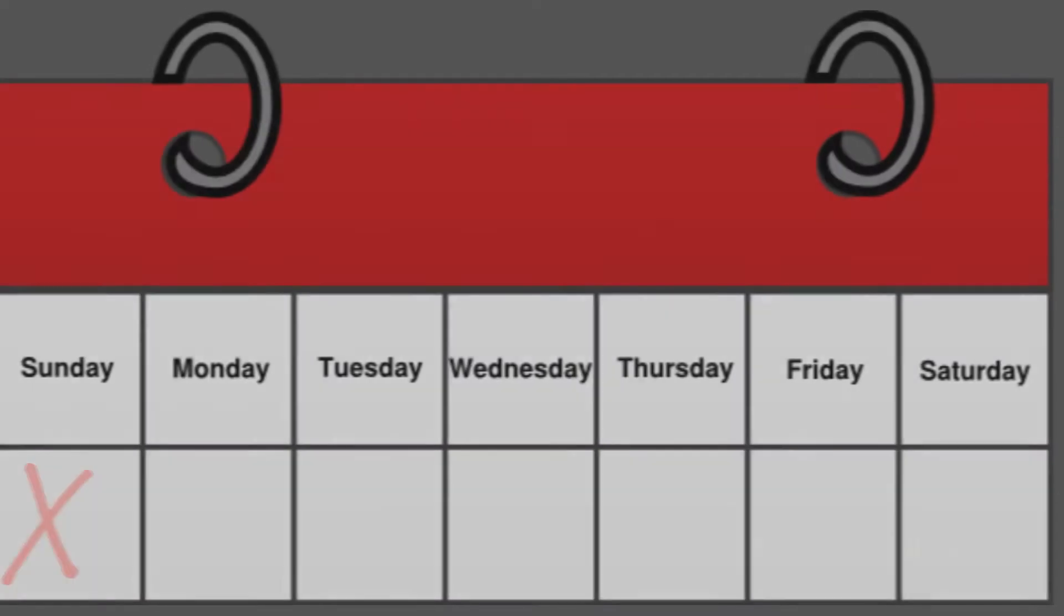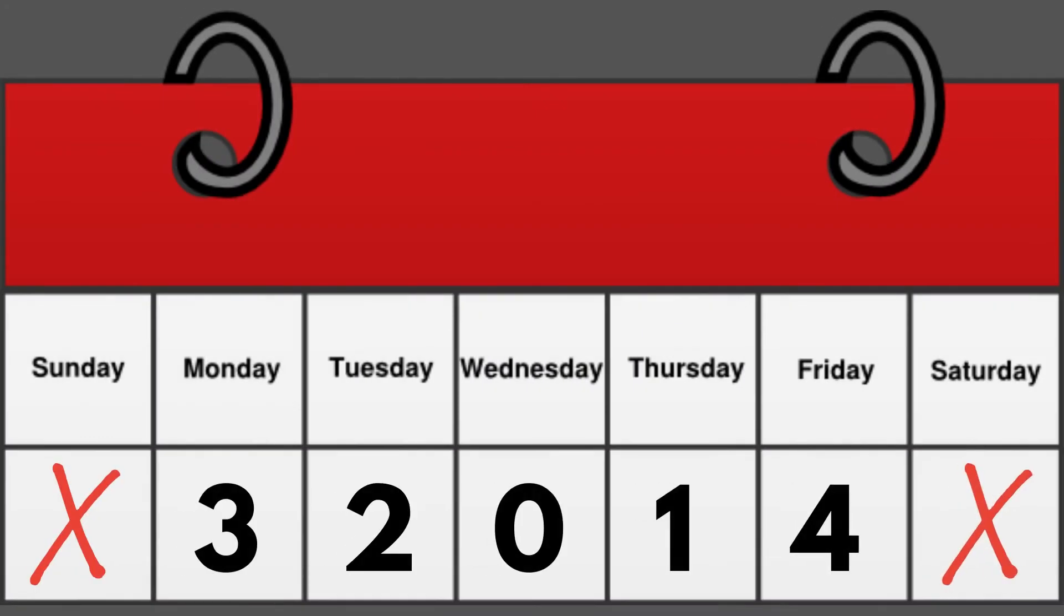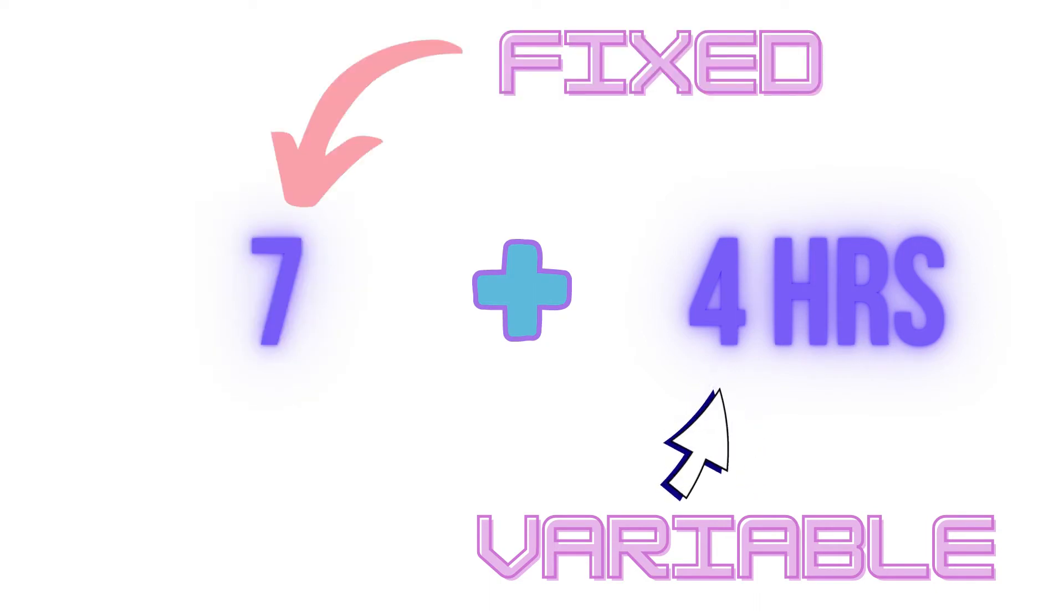Now the number of extra hours is changing every single day. And she gets to decide how many extra hours she wants to work that day. So these extra hours are variable in addition to the fixed number of working hours that is seven.